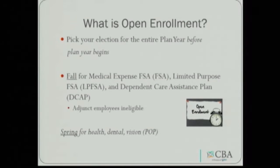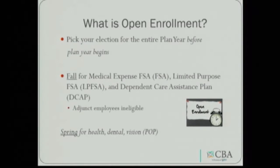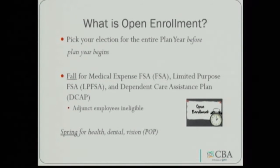What is open enrollment? It's the time where you can actually pick your benefits for the year. You'll need to do this before the year actually begins. Fall is the period of time for picking your medical FSA, limited purpose FSA, and dependent care. Adjunct employees are ineligible for these particular benefits. Spring is the time to pick your health, dental and vision benefits — that pre-tax or POP part of the benefit. That part's automatic.